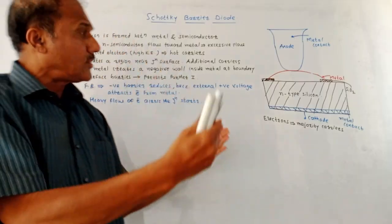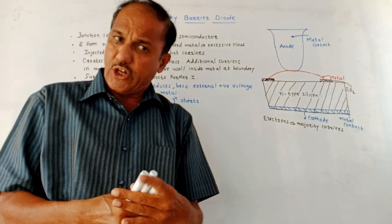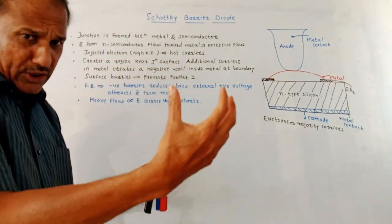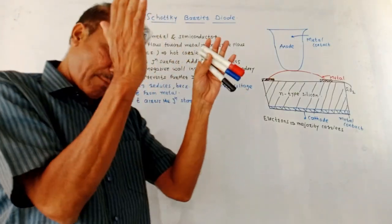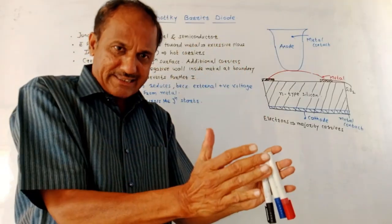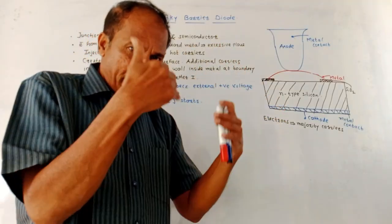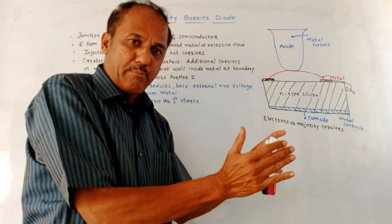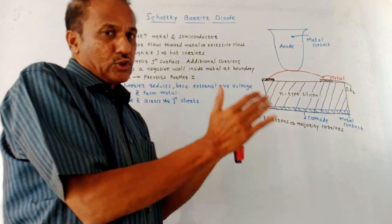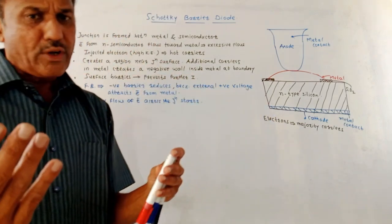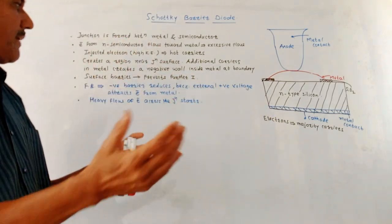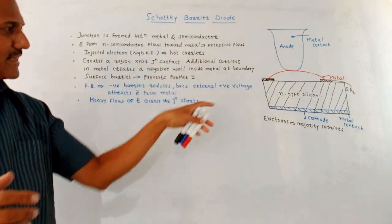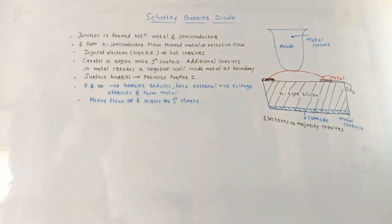This is the way the Schottky Barrier Diode works. Whenever forward bias is applied, the flow of electrons starts taking place because it reduces the barrier. This flow can be controlled by controlling the forward bias applied to the device.